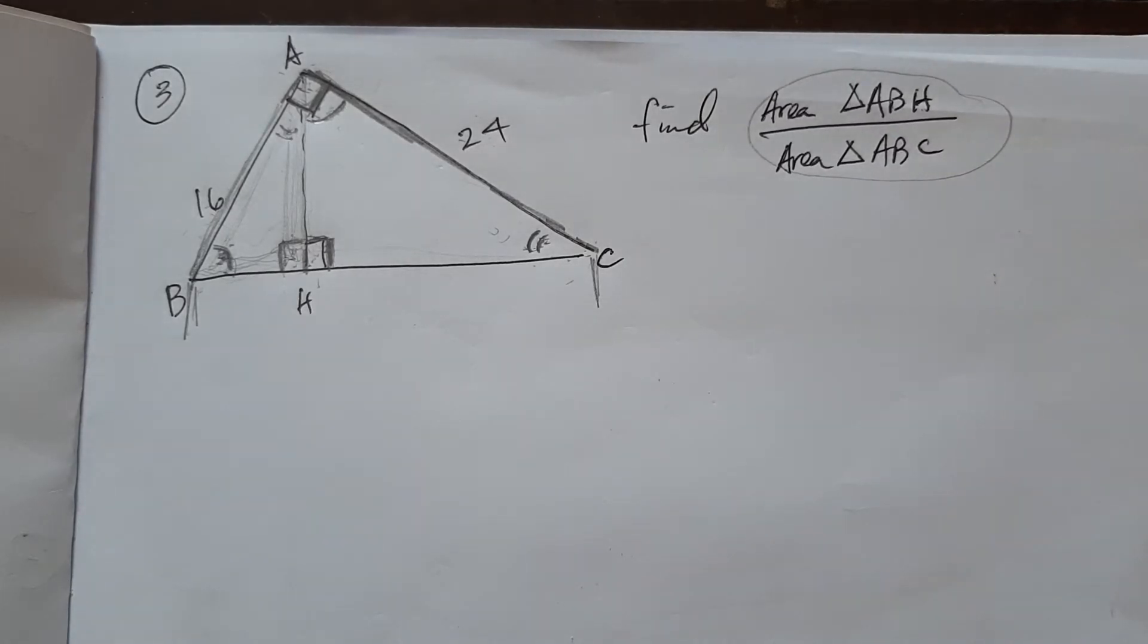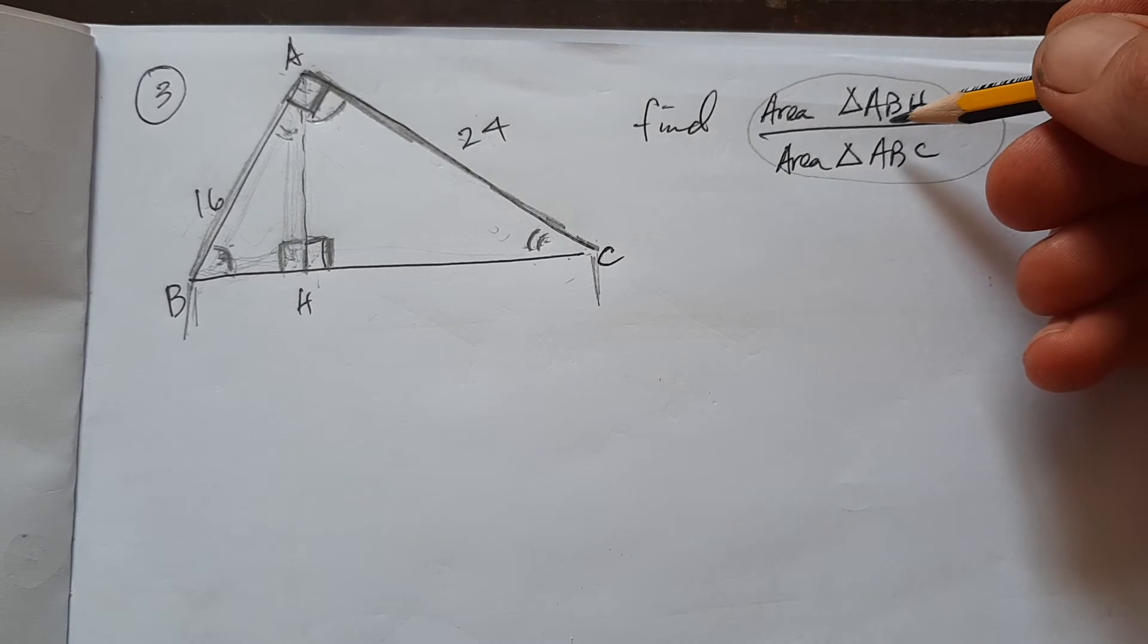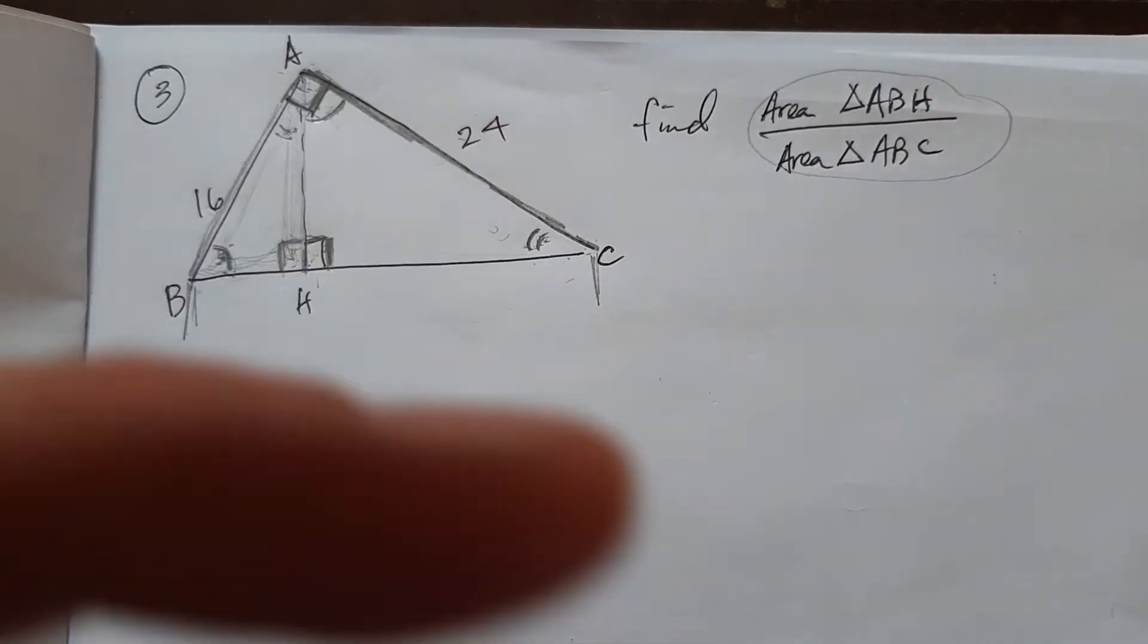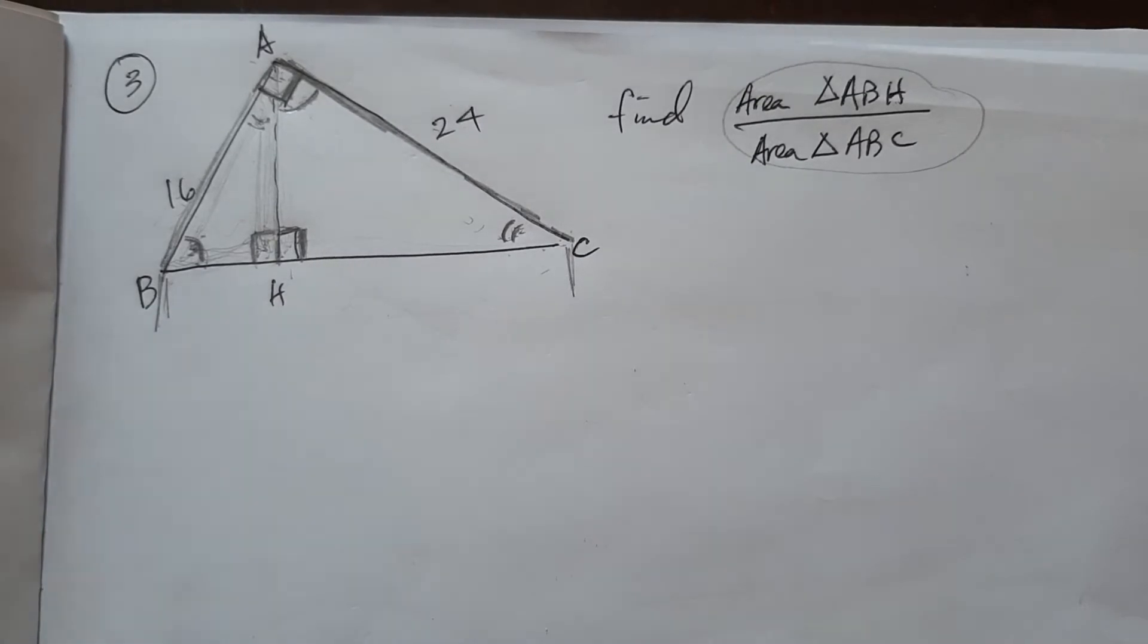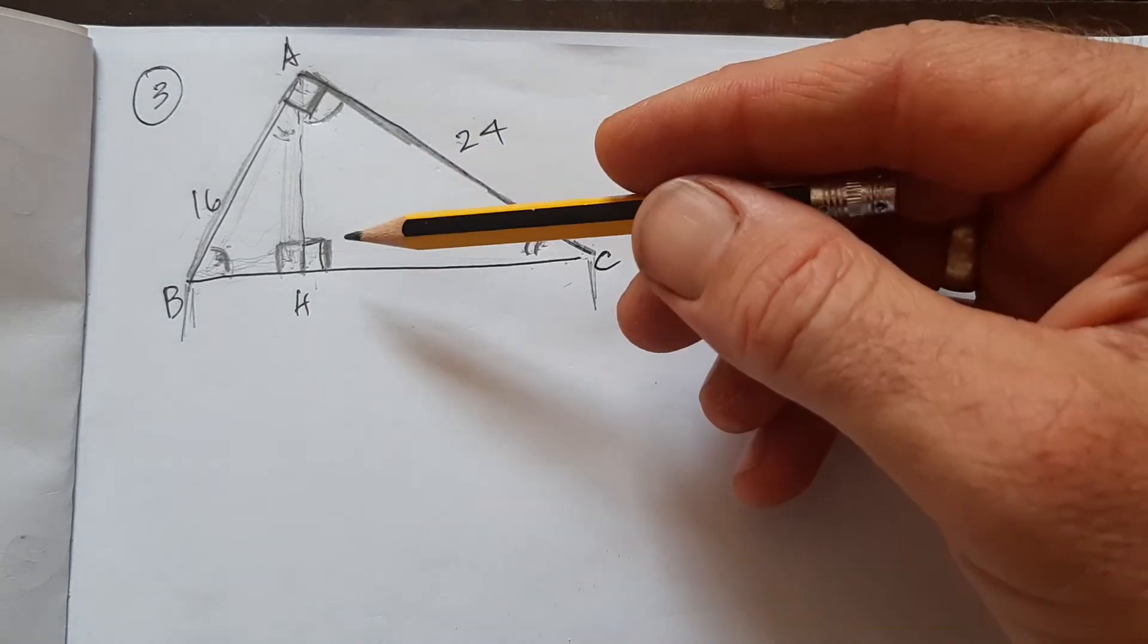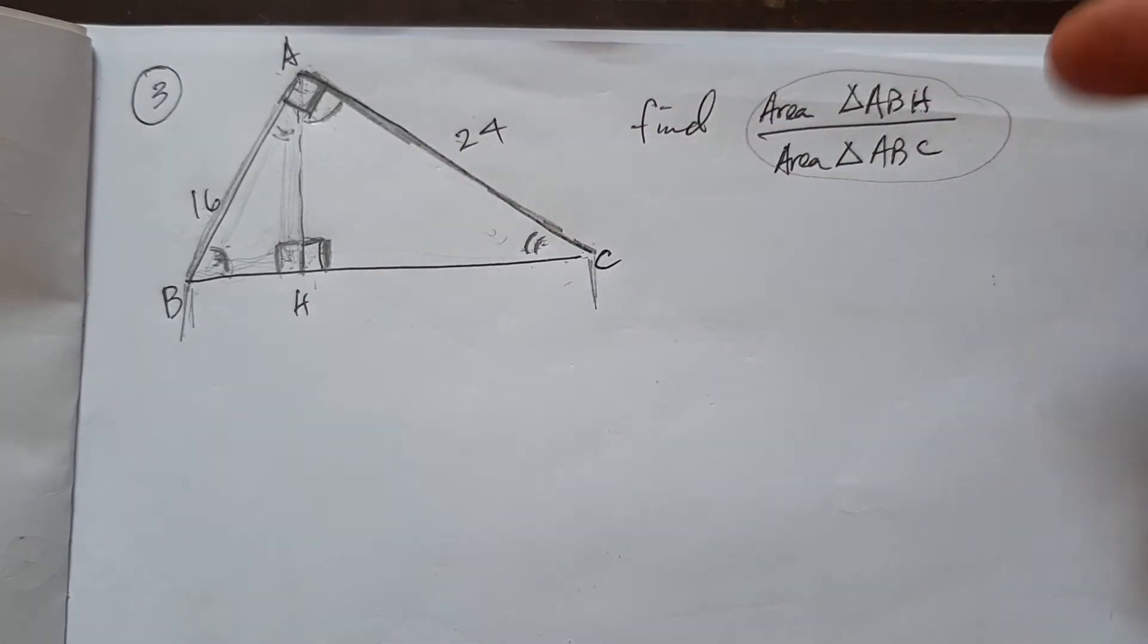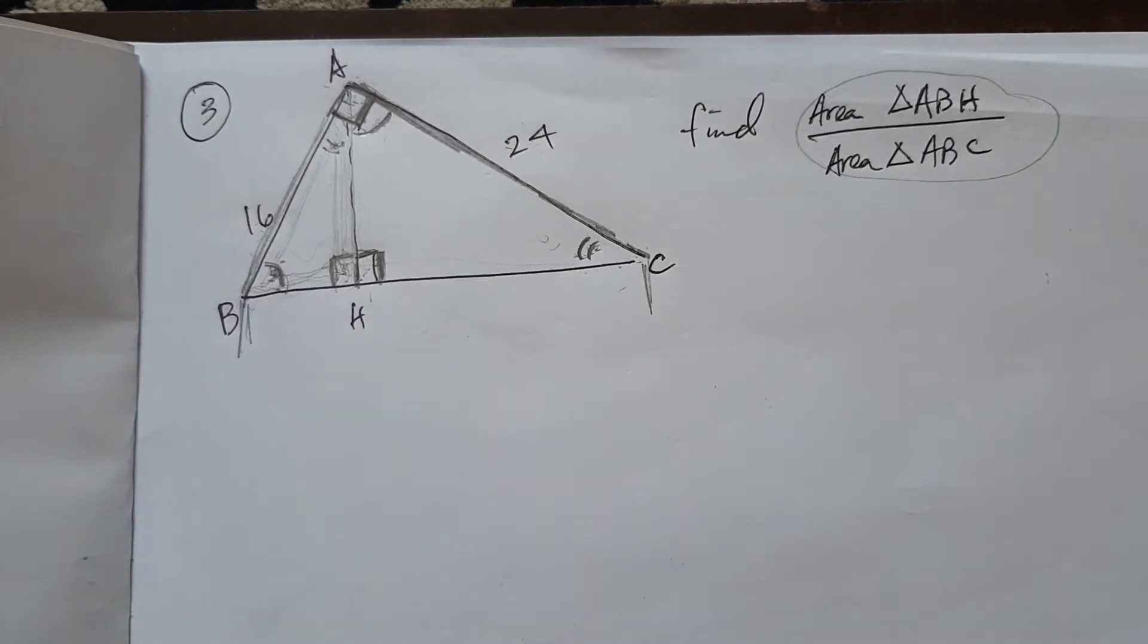Okay, so if we can find the ratio of the perimeters and square that, we get the ratio of their areas. And so also we don't need to find the entire perimeter. If we can find the ratio of corresponding sides, then we've got the same as the ratio of the areas. So I don't need to find everything.